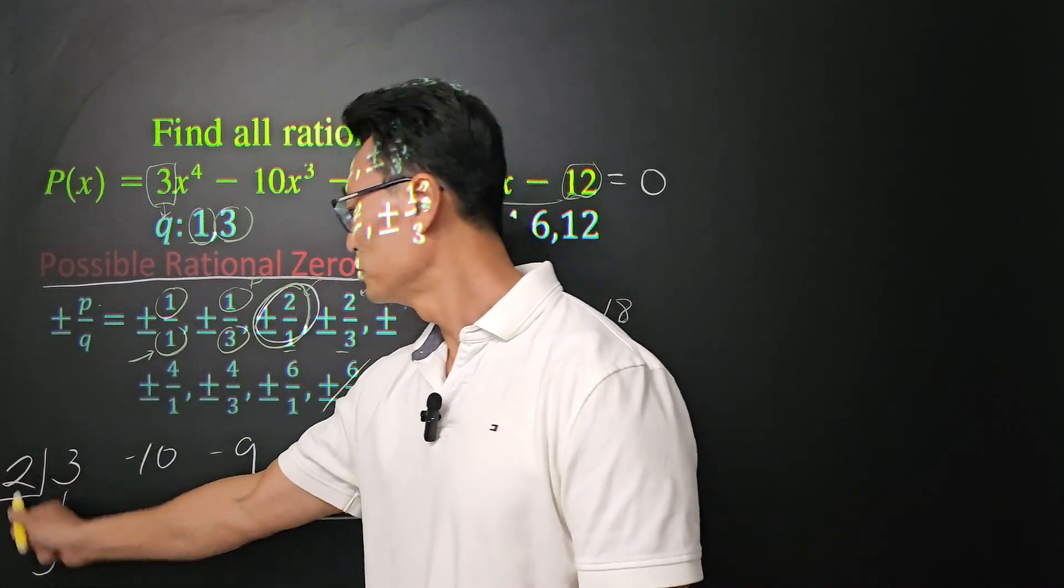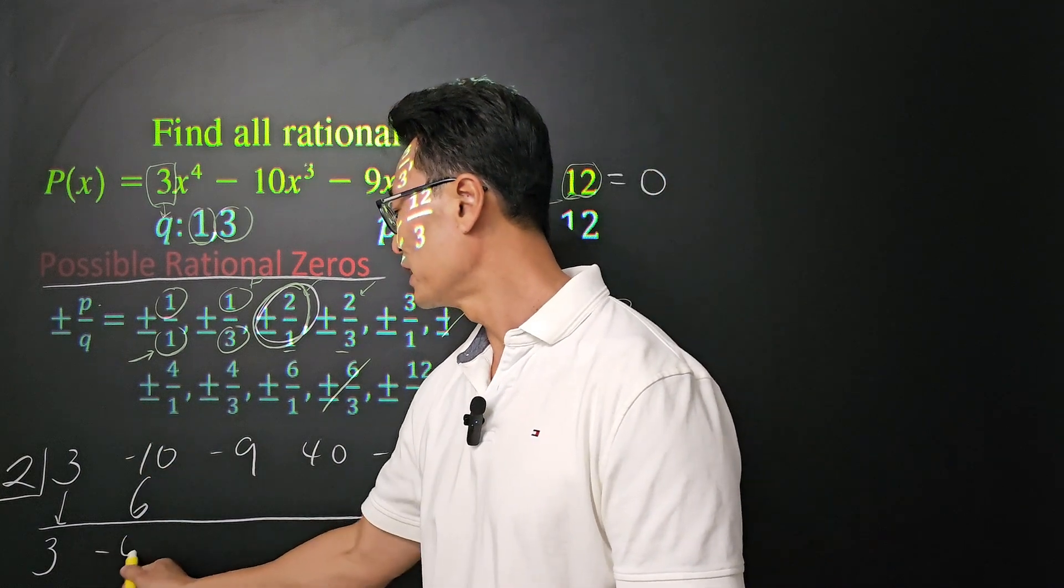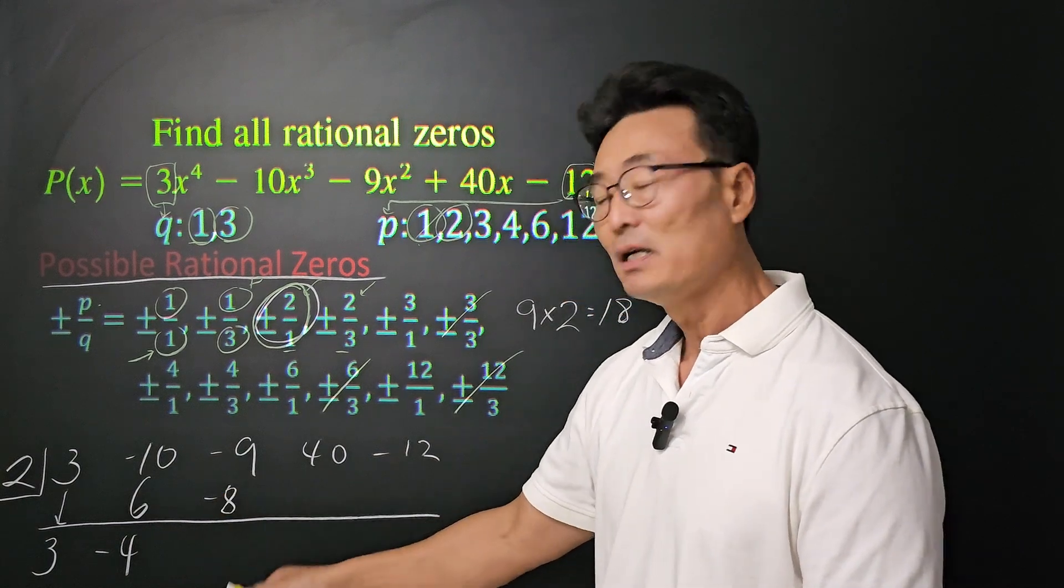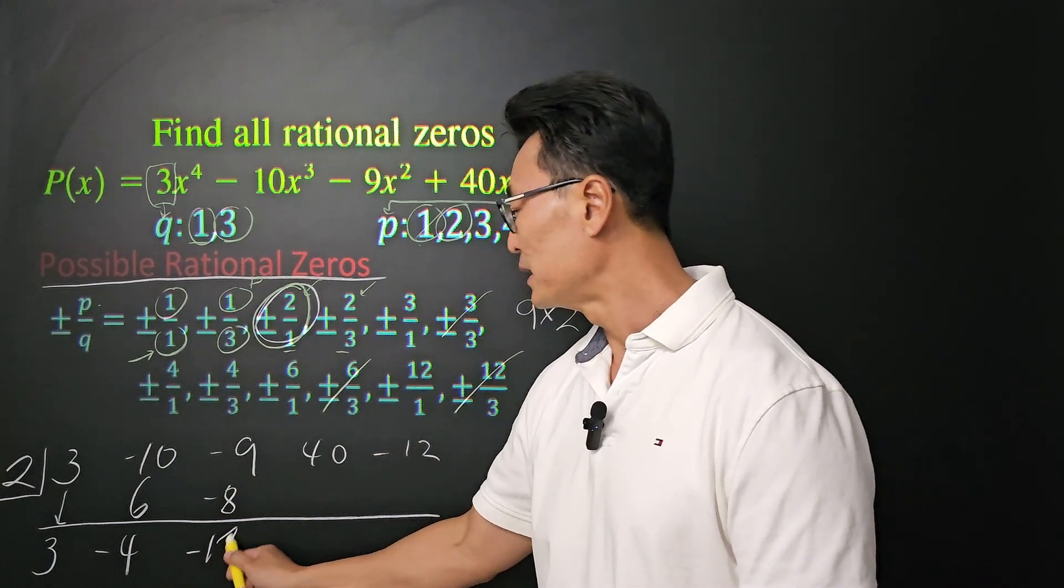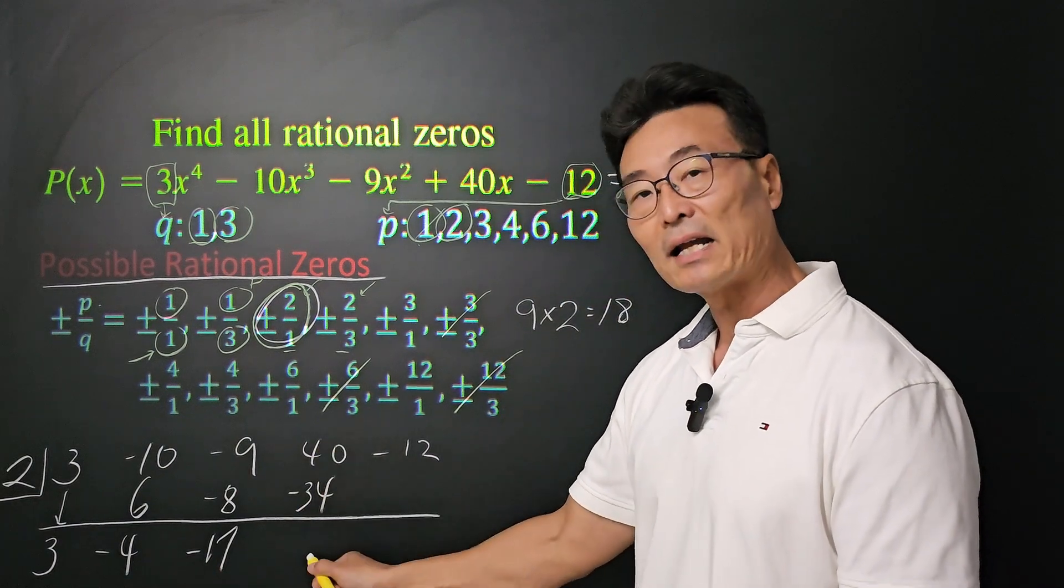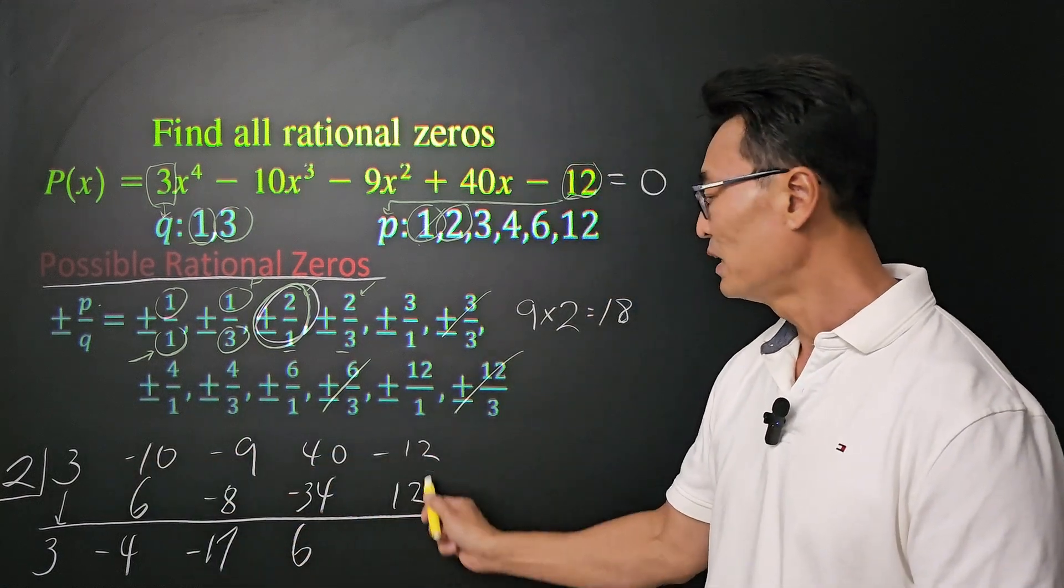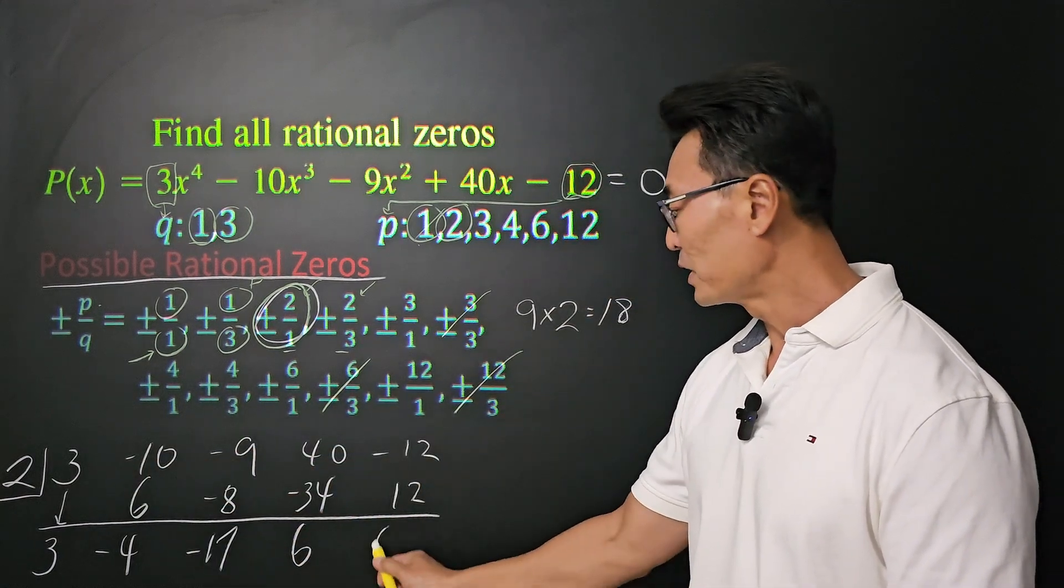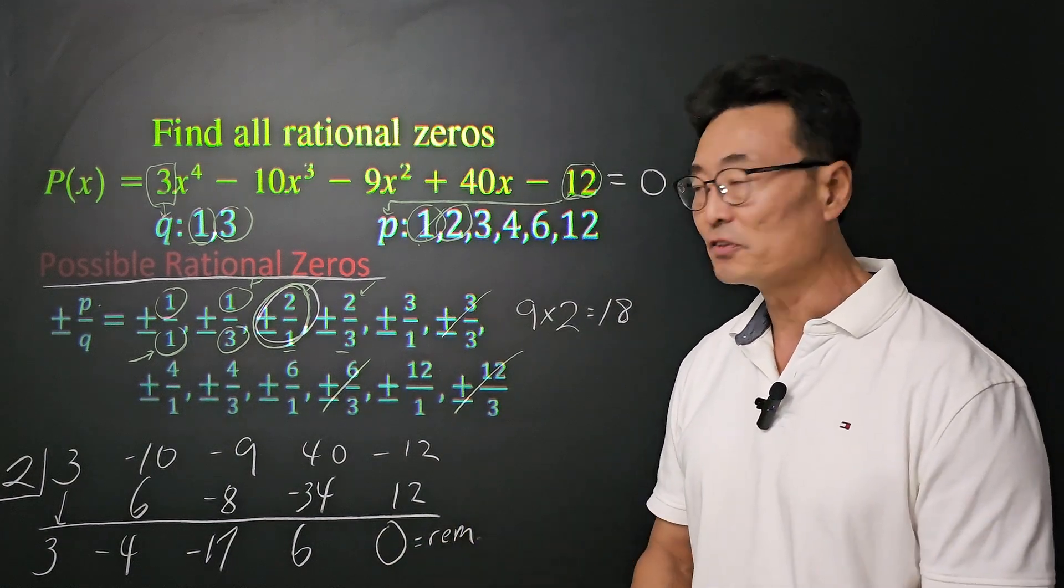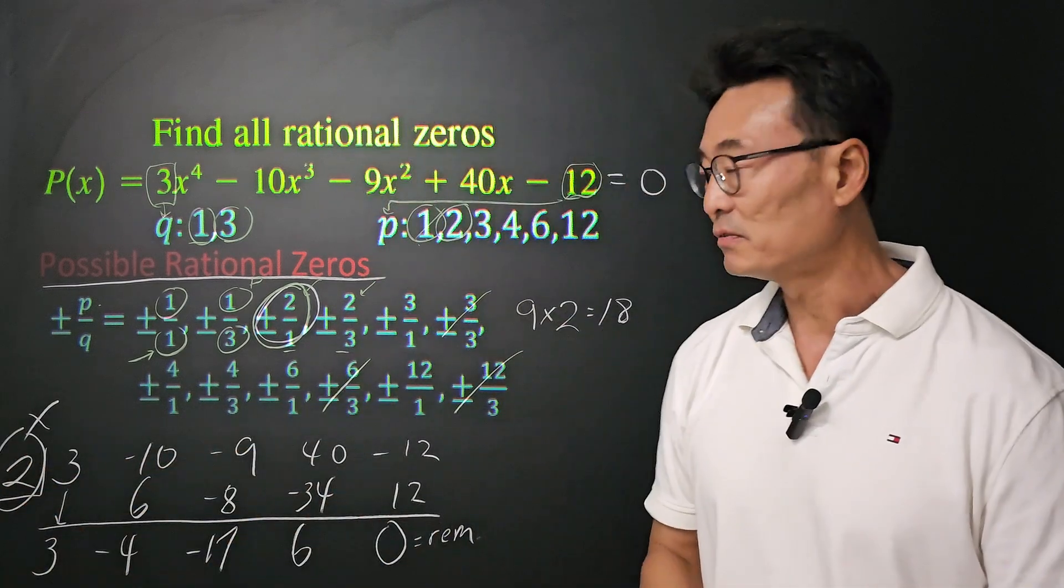3 equals on the bottom. 2 times 3 is 6. Add it up and down, so I get negative 4. Multiply the 2 and the negative 4, so we get negative 8. Add it up and down, I get negative 17. 2 times negative 17 is negative 34. Again, add it up and down, we get a 6. And then 2 times 6 is 12. Add it up and down, we get a 0. And the very last number is always the remainder. And since the remainder is 0, we know that 2 has to be one of the values of x.